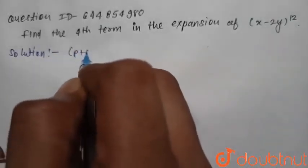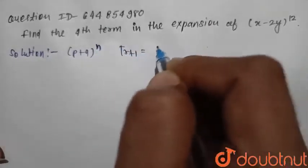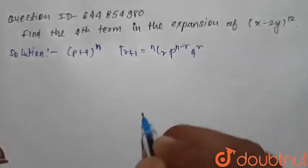First, we consider a general binomial expansion (p + q)^n. The general term of this binomial expansion is T(r+1) = nCr × p^(n-r) × q^r.